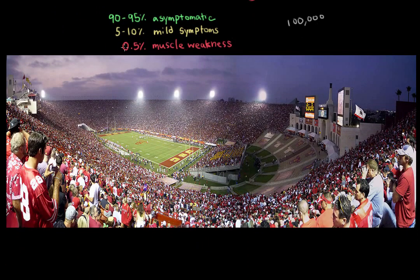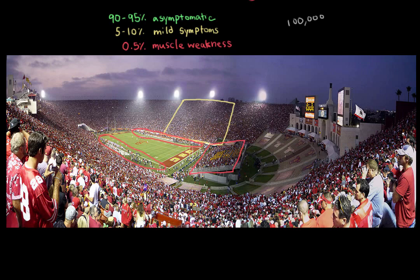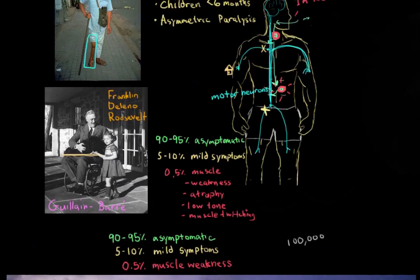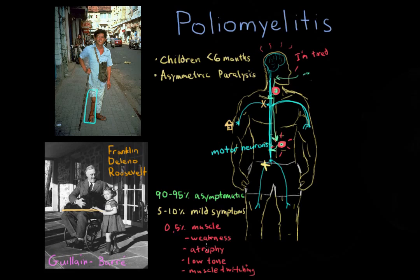To put this in perspective: in a football stadium of 100,000 people, about 90,000 may be asymptomatic, only 5,000 to 10,000 will have symptoms, and those experiencing muscle weakness might be just the band members and players and coaches of both teams. Still, because the disease can spread very easily from person to person, more and more people become affected, and though it's a small proportion, the damage can be very severe.